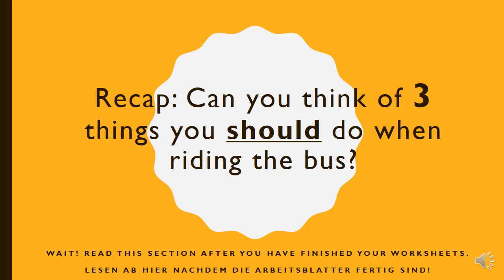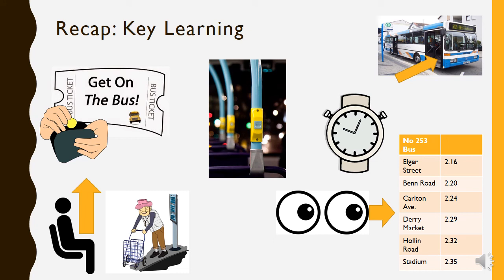Now we're going to recap our learning. Pause the video here until after you've finished your worksheets, then carry on. Can you think of three things you should do when riding on the bus? You should pay for a ticket. You should hold on to the rail. You should stand up to let an old person sit down. You should get on at the front of the bus. You should look at the timetable and check what time you need to be at the bus stop.